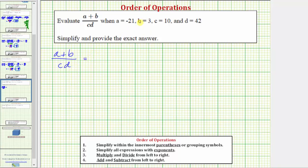When performing the substitution, we'll put the values in parentheses. In the numerator, we have a plus b, which would be negative 21 plus three. In the denominator, we have c times d, which would be 10 times 42.